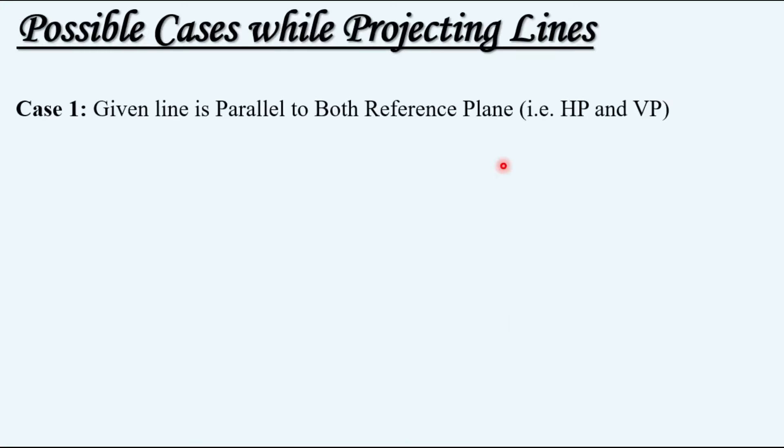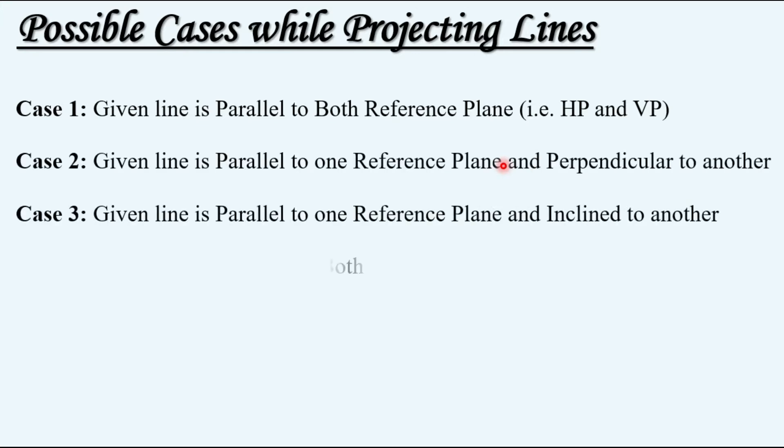The possible cases for projecting lines, as we have seen in the previous video, there are four possible cases. Out of these, the first case is already discussed and the link is provided in the description. The second case has been discussed along with both sub-cases possible.